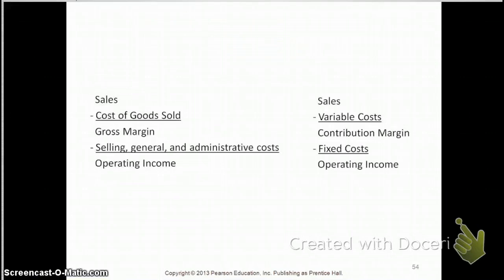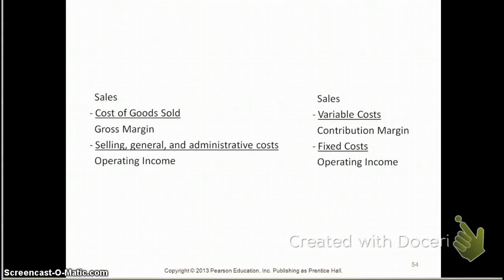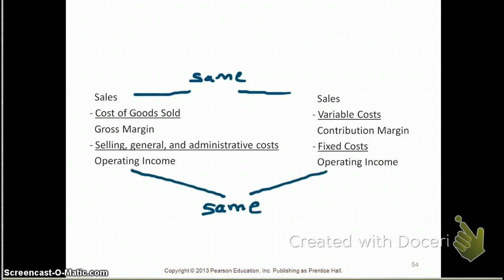Here are the two different income statements side by side. On the left-hand side you have the traditional income statement, and on the right-hand side you have the contribution margin income statement. The sales numbers are the same for both, and the operating income number is also the same for both. However, what's in the middle is what changes — how you arrive at that operating income is what's different between the two methods.